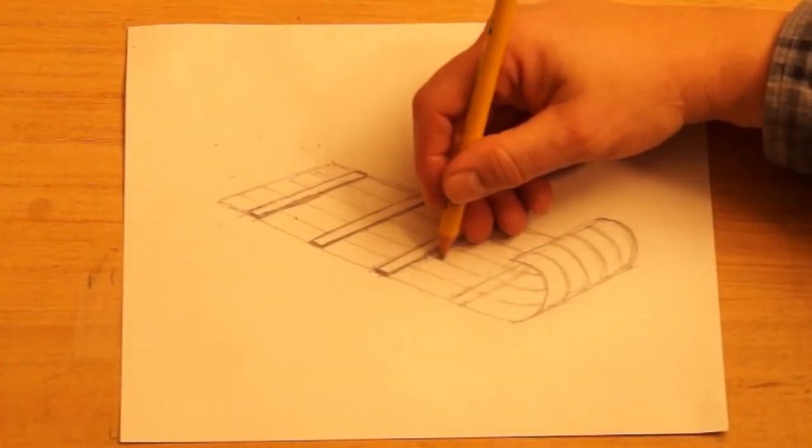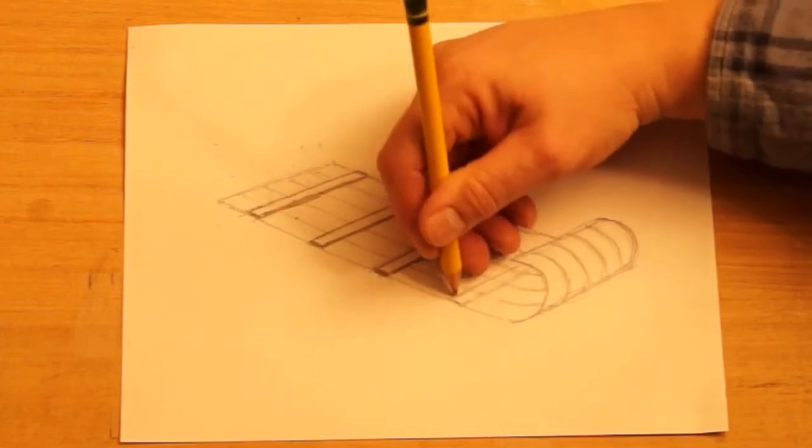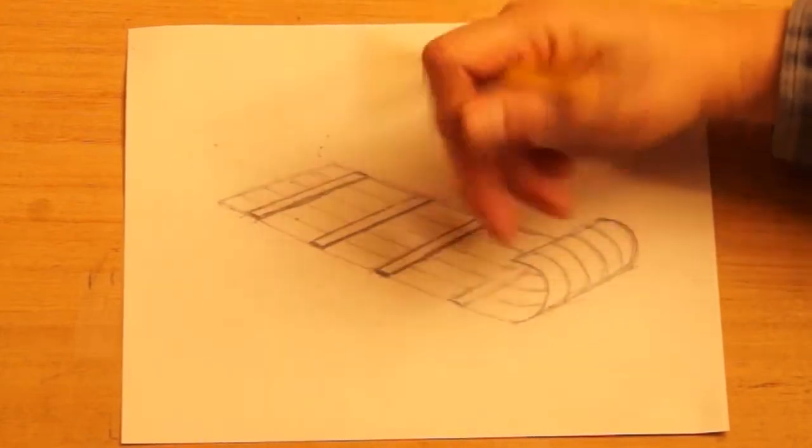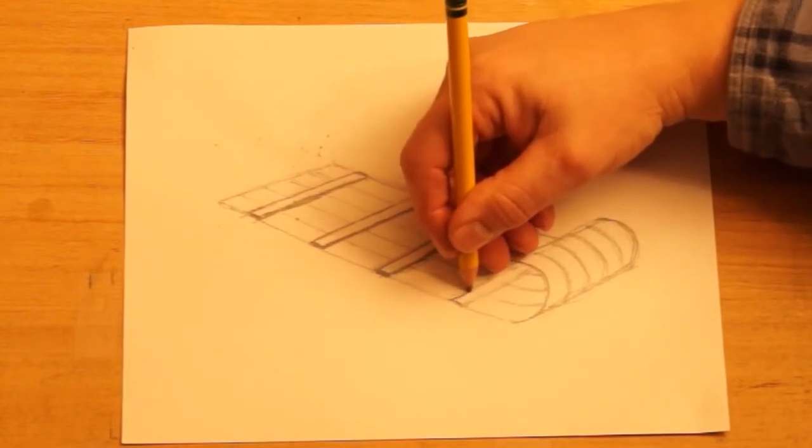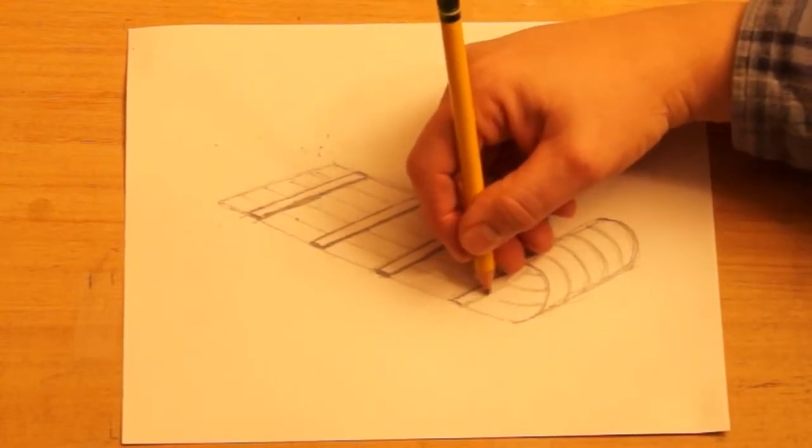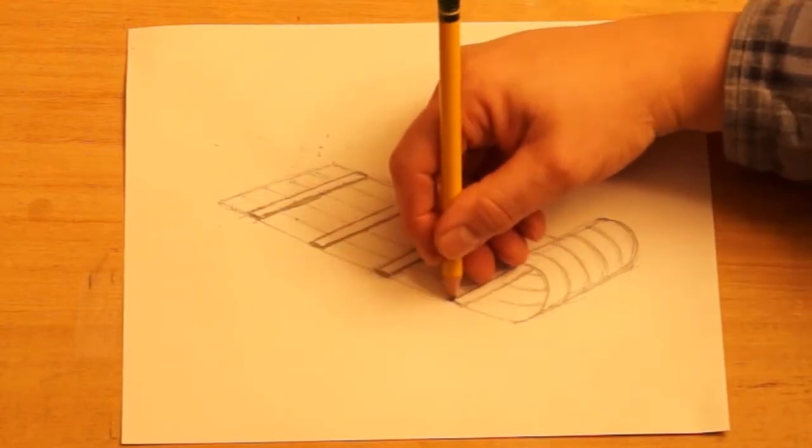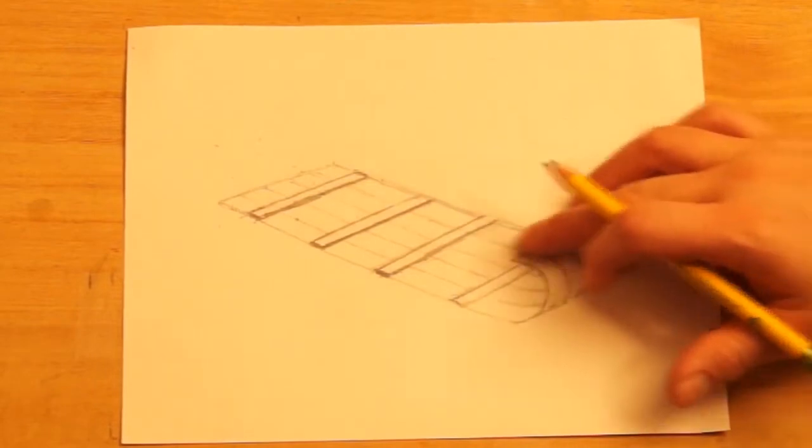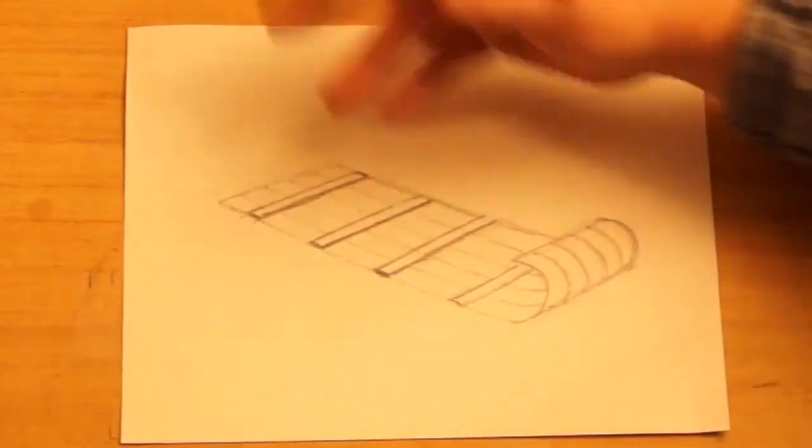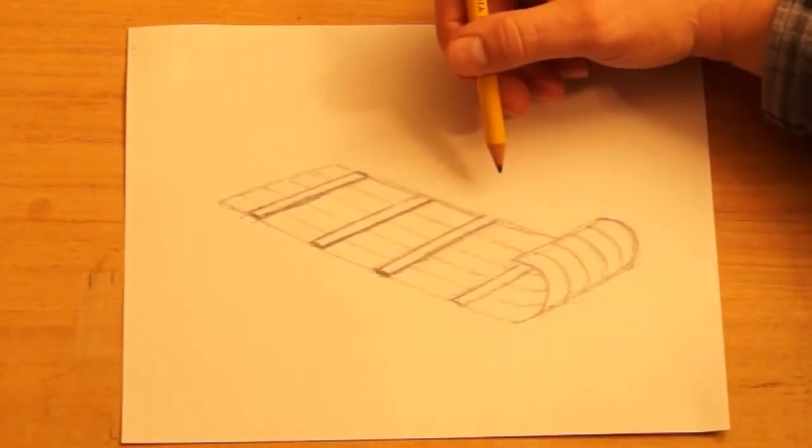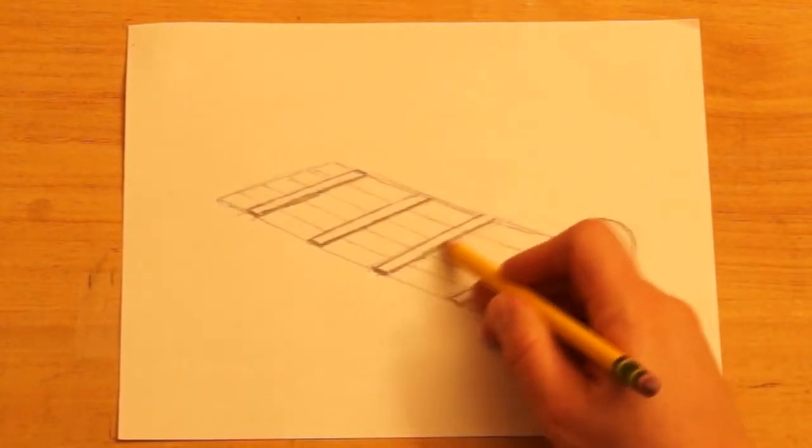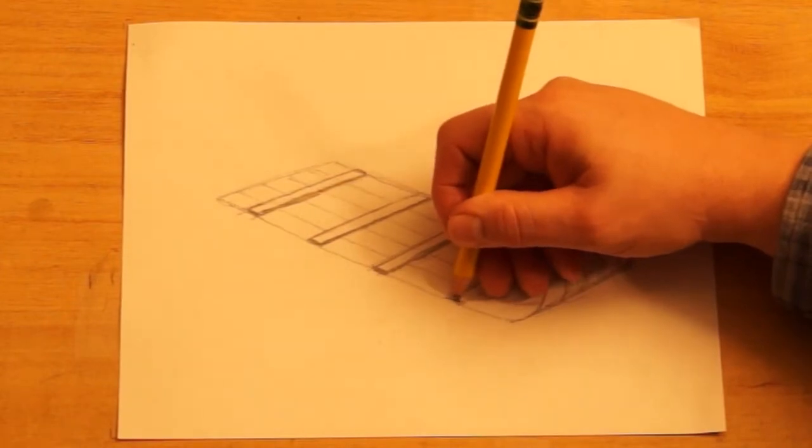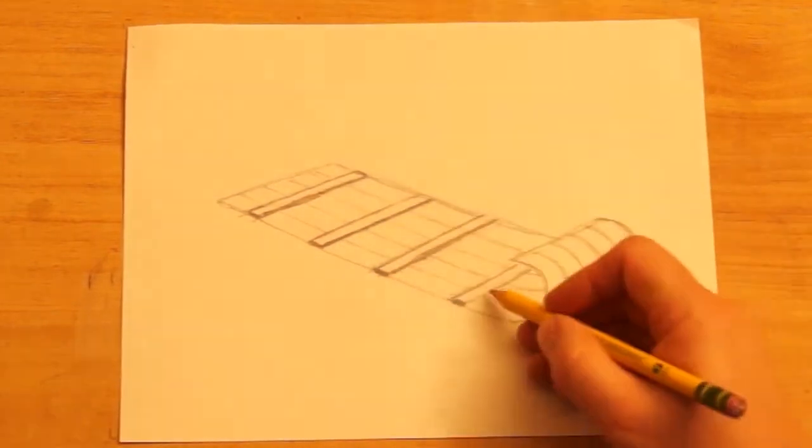Of course, if you're drawing a toboggan with somebody sitting in it you're not going to see all these boards. This just helps you to understand the structure of the toboggan and then you can draw these in as you need to. You would draw what you see around the people. But if you put people in here you could put two or three people on this toboggan sitting comfortably, or if they were smaller people probably you might get four, like kids.